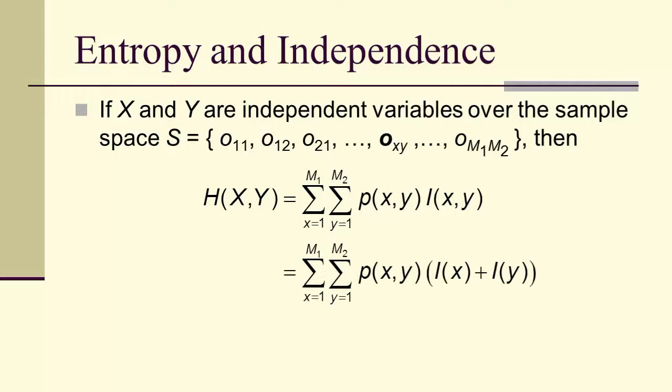So we have the double sum. And if we have independence, then surprisal, joint surprisal I(x,y) is equal to the sum of the surprisals of the individual x and y.